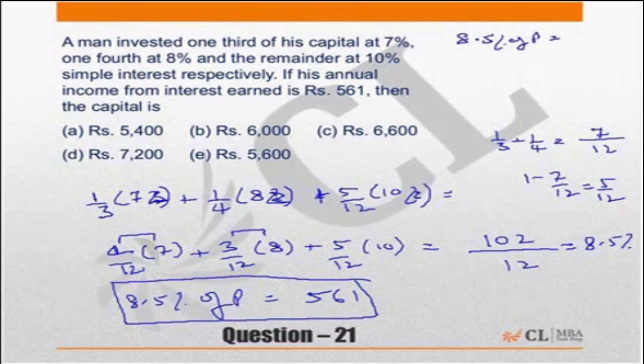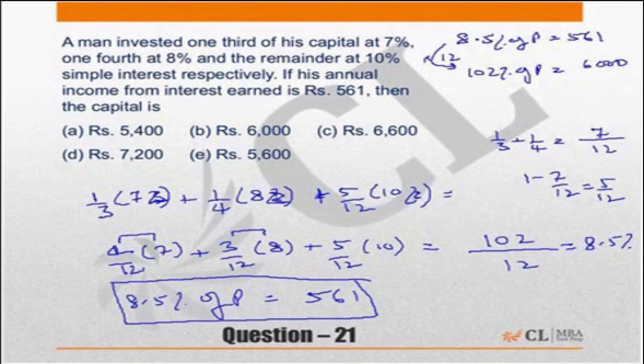Or multiply this by 12. 102% of principal will be 561 into 12. 500 into 12 is 6000. 60 into 12 is 720. And 12. So 6732.